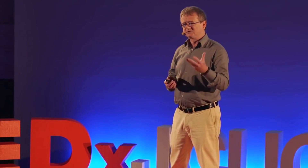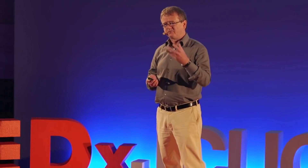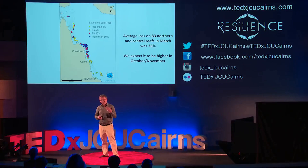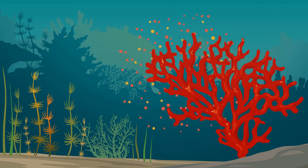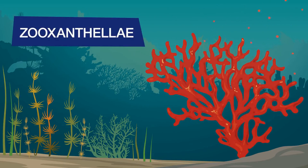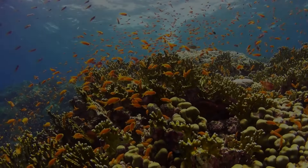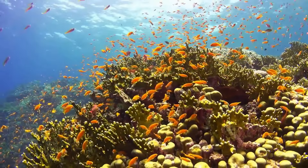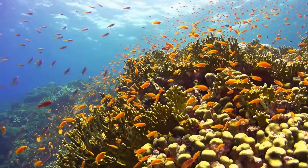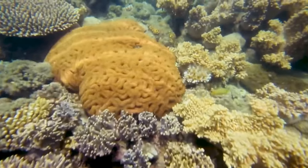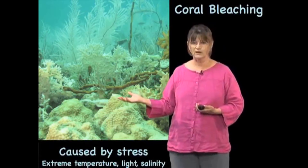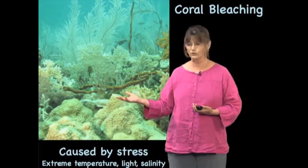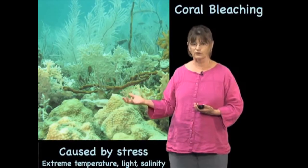Unless the zoxantheli in their tissues regrows quickly enough, causing coral to expel the algae called zoxantheli that live in their tissues. The zoxantheli provide coral that dazzling color we associate with a healthy coral outcrop. And that's because most of the zoxantheli have left the tissues of the coral.